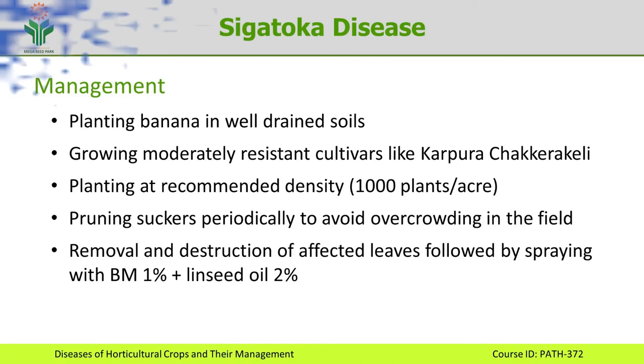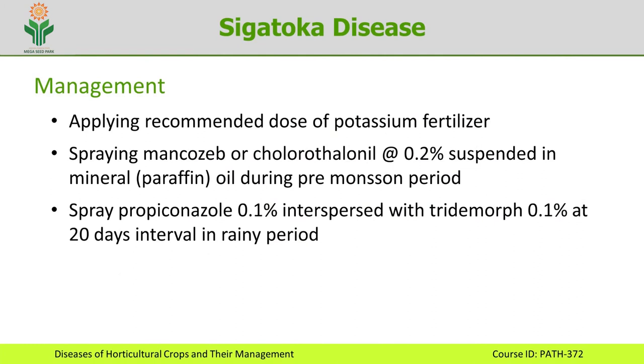The disease can be managed by spraying both contact and systemic fungicides. Contact fungicides such as mancozeb or chlorothalonil at 2 grams per liter can be sprayed during the pre-monsoon period. During the rainy season, systemic fungicides like Propiconazole at 1 ml per liter, interspersed with Tridemorph at 1 ml per liter at 20-day intervals, should be used. Alternation of chemicals is very important because repeated use of the same chemical may lead to resistance development in the pathogen Mycosphaerella musicola.